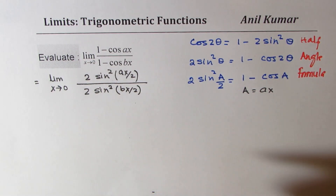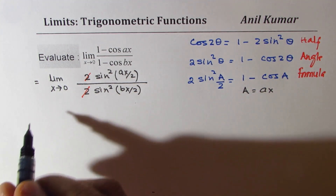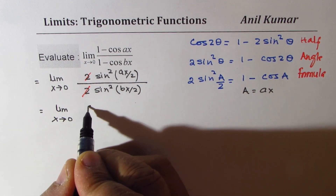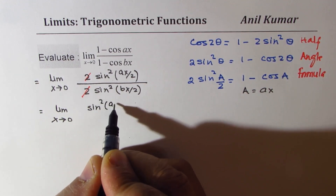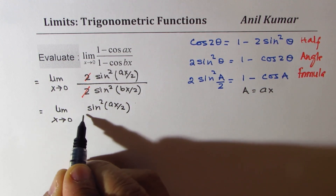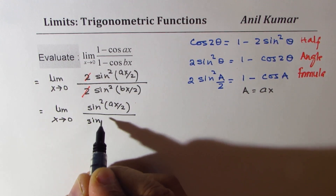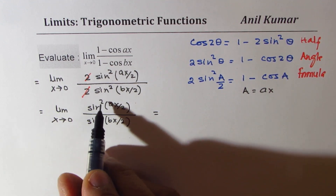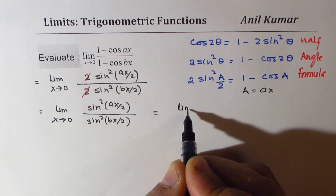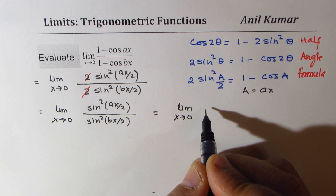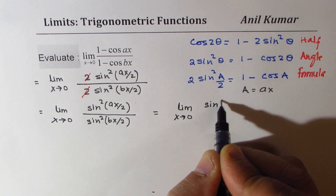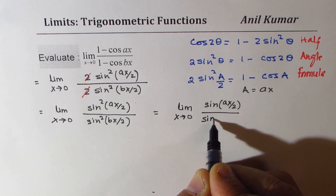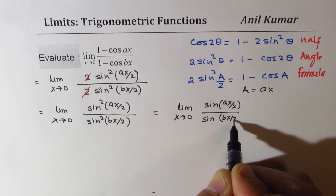Now 2 and 2 cancel. So we could write this as: limit x approaches 0 for sine square ax by 2 divided by sine square bx by 2. Since this is squared, we could write: limit x approaches 0 of the quantity sine ax by 2 divided by sine bx by 2, whole squared.